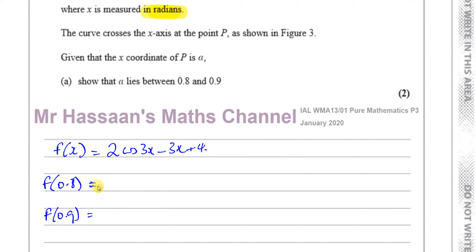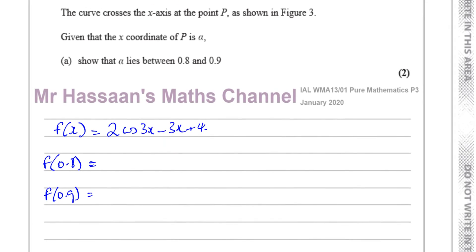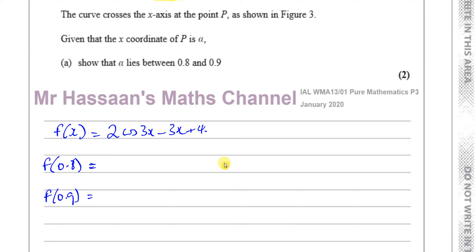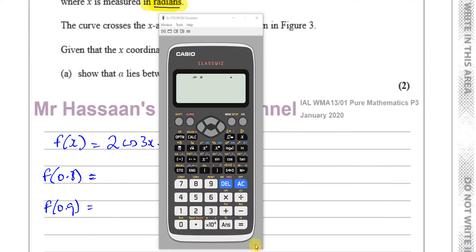And you show that there's a change in sign, but you've got to be careful here, because x must be in radians, and I'm sure if you don't put x in radians, you won't get a change in sign, and you're going to get confused. So reading the question is really important here. Okay. So I'm going to use the calculator and do that.